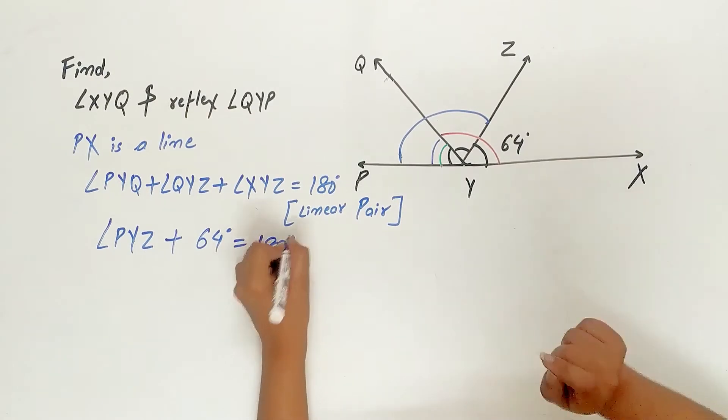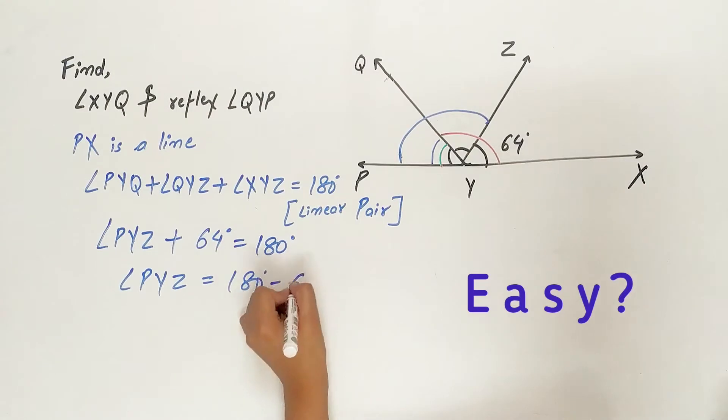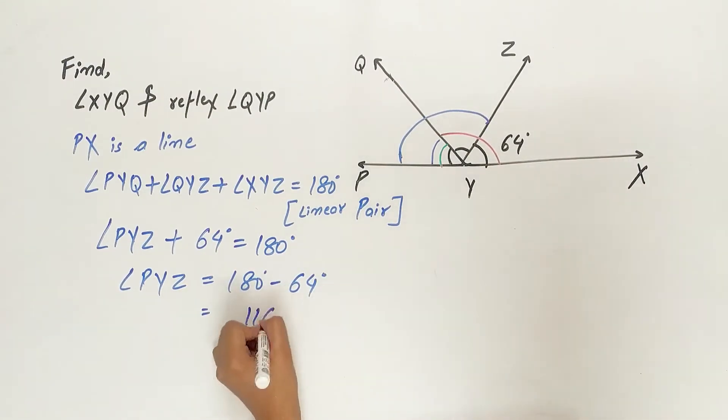Angle PYZ is 180 degrees minus 64 which is equal to 116 degrees.